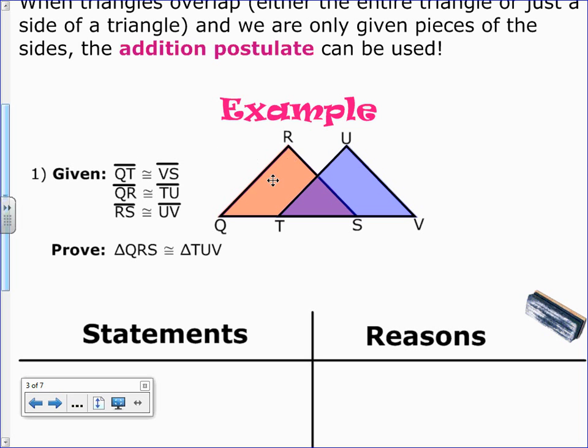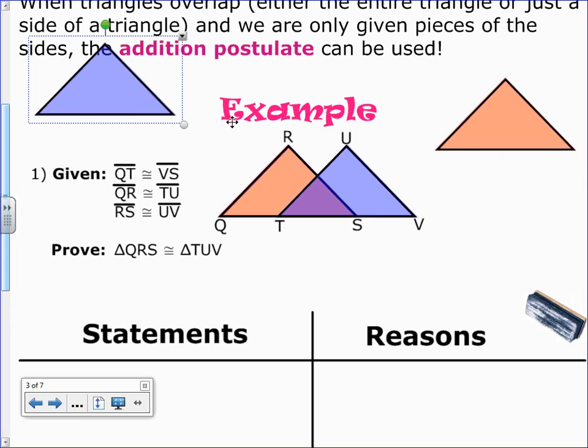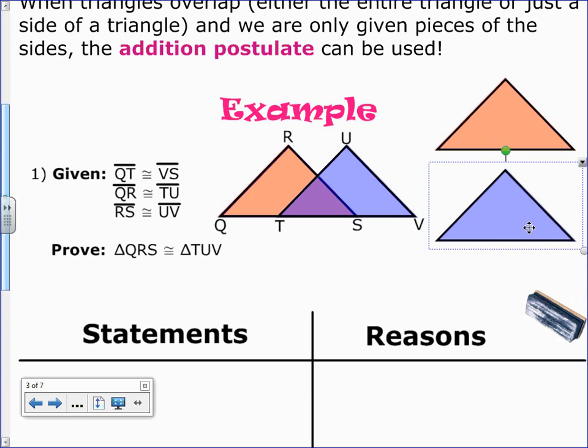Here we want to prove triangle QRS is congruent to triangle TUV. You can see here in our diagram that we took it out so that you could see it better. We have QRS and TUV. We'll leave it in the diagram as well as set aside so that you can see it. We are given here QT is congruent to VS. Notice that's only a piece. So that's where we're going to need to use the addition postulate.